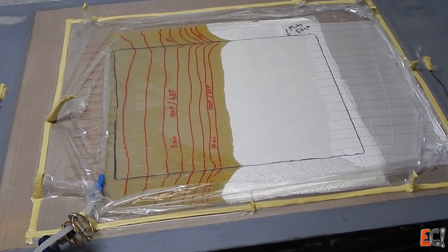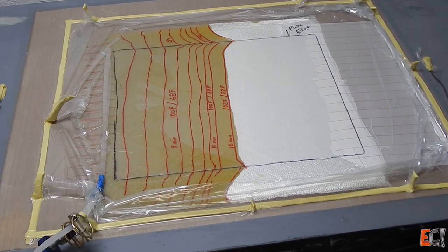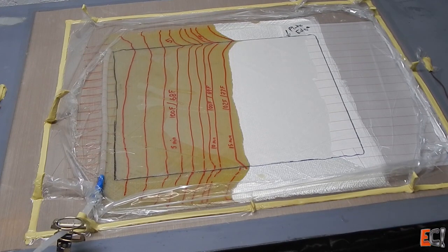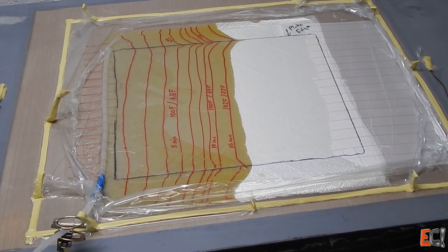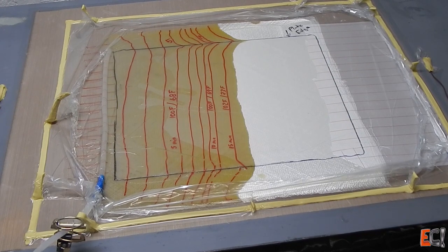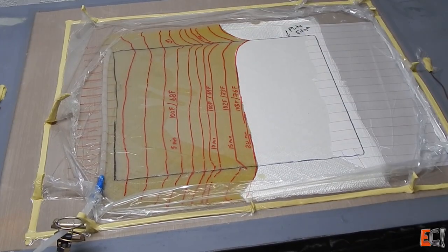This next mark will be a five minute mark. I'm writing down the temperature of the surface and also the temperature of the pot of resin, so I can see as the exotherm starts to build up heat in the pot.